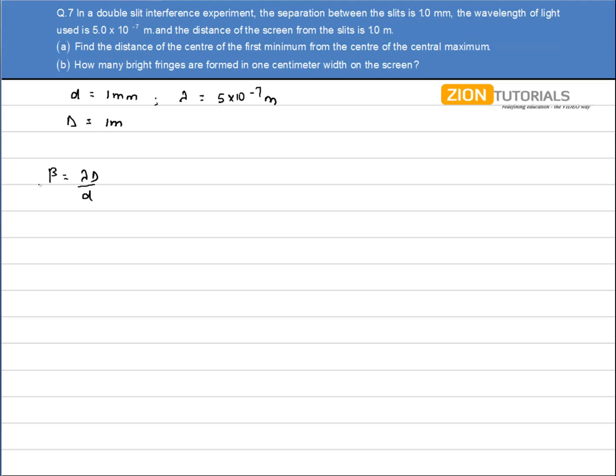Beta is equal to lambda D by small d; that is the formula of the fringe width. So beta comes out to be 5 × 10^-7 into capital D by small d. So fringe width comes out to be 0.5 mm. Now I'll tell you the reason why I found out the fringe width.